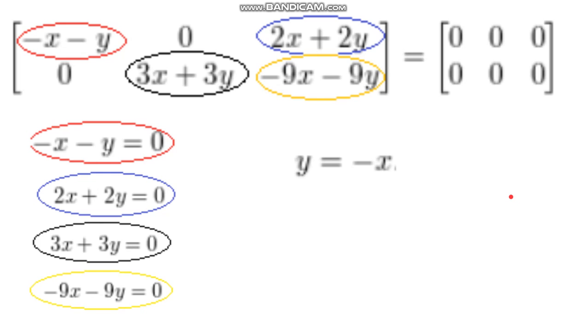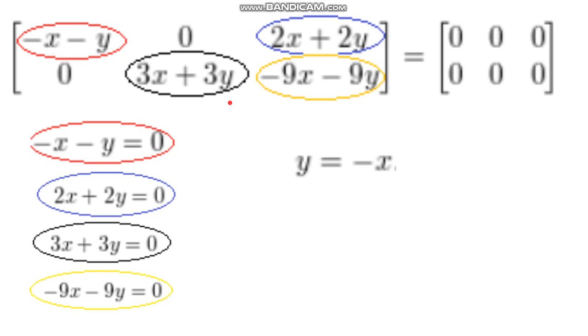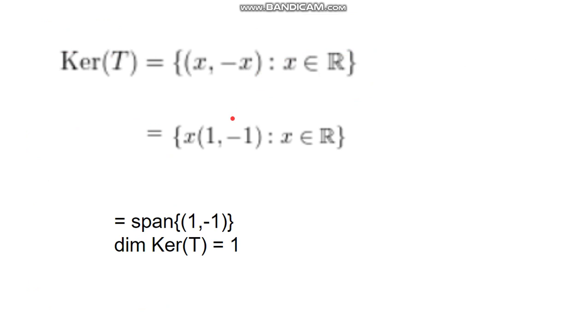And here we just solve, set this all equal to zero, and solve for y, and we're going to get negative x. So then, we could say that the kernel of T is a set of x and negative x. There was a y here, we solved for y, and in all cases, we got it was equal to negative x.